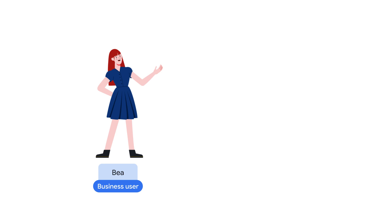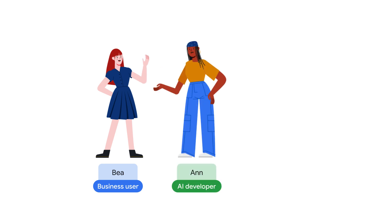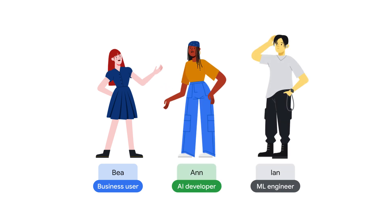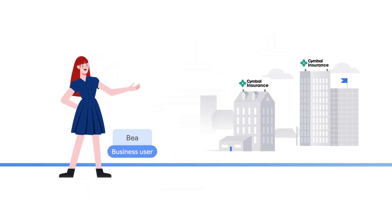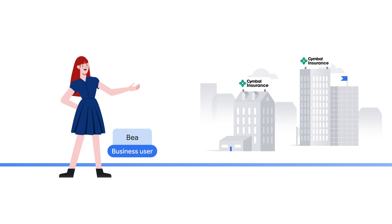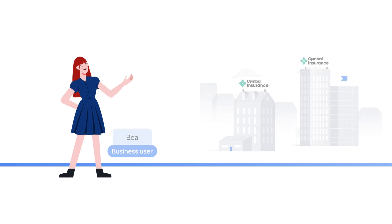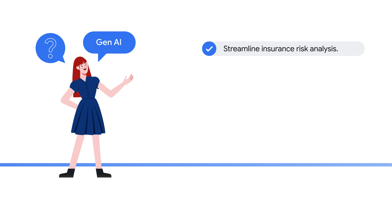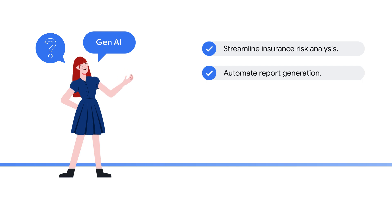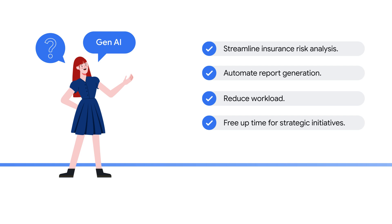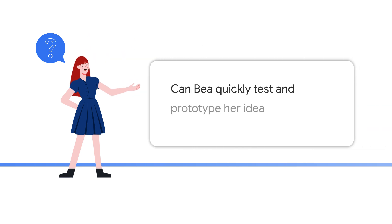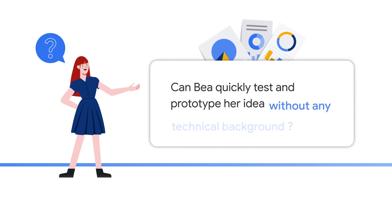Bea, a business analyst of Symbol Insurance, Ann, the AI developer, and Ian, the ML engineer, are exploring these possibilities. Bea, the business analyst, oversees a national insurance company with a strong presence in the Western states. She envisions Gen AI streamlining the company's insurance risk analysis and automating customized report generation. She believes Gen AI could significantly reduce her workload, liberating her time for more strategic initiatives. But can she quickly test and prototype her idea without any technical background?